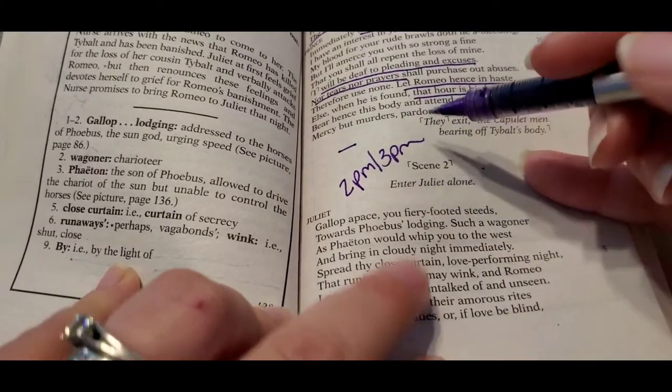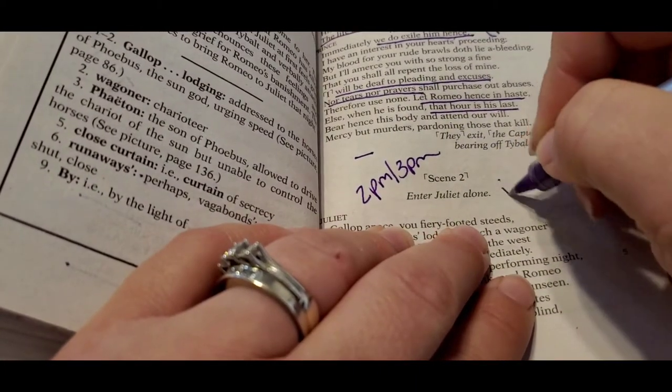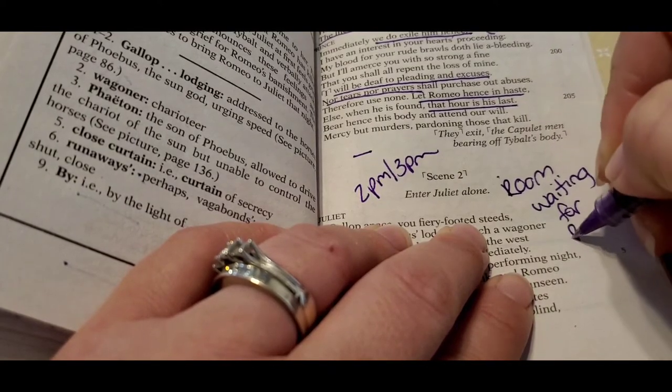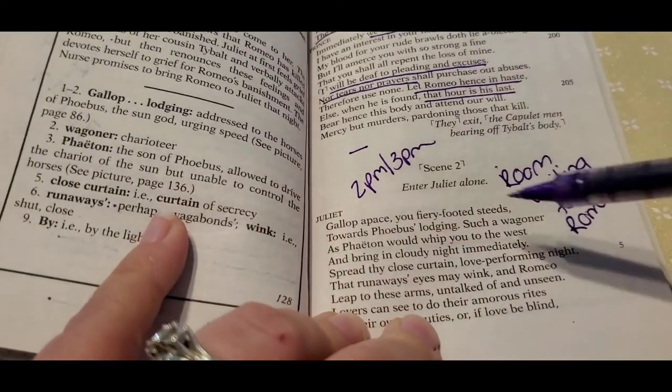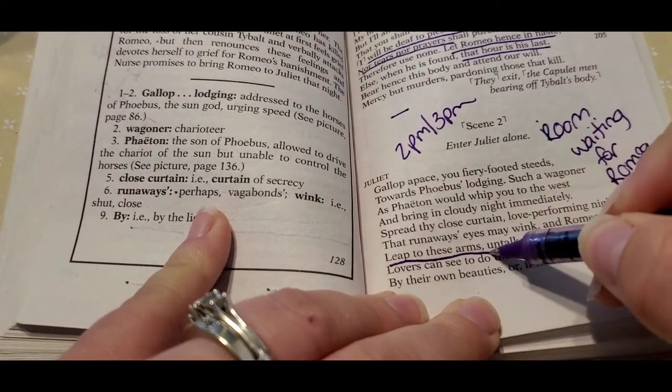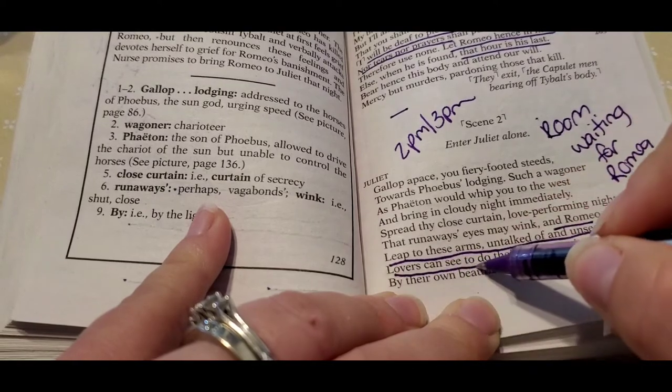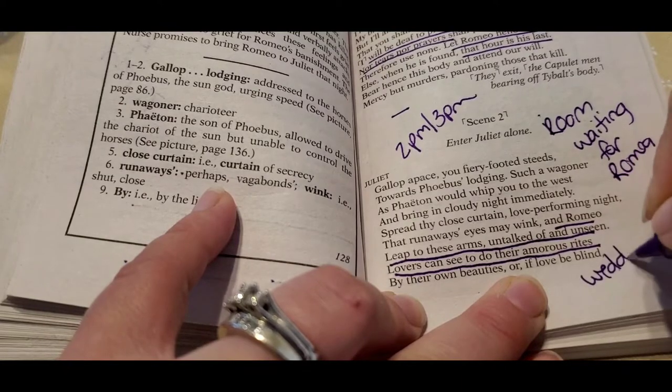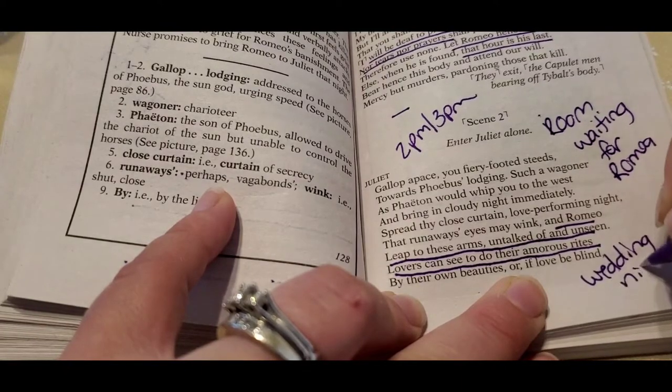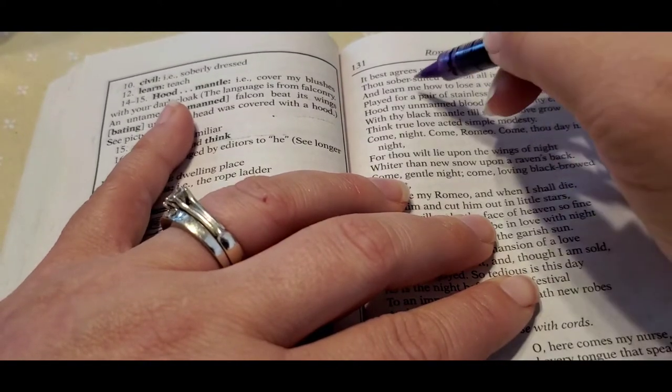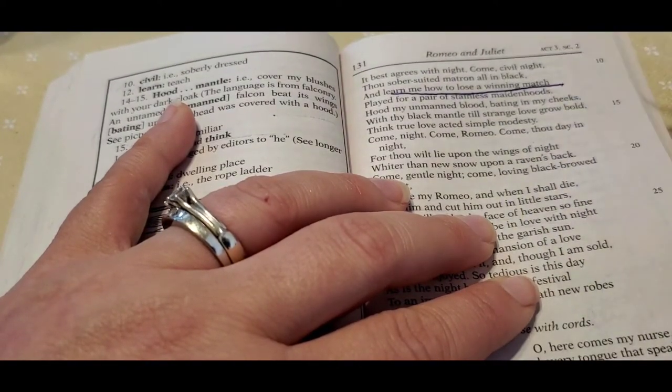So we start off, it's 2 p.m., 3 p.m. This is Juliet's room, and she's waiting for Romeo. Basically, she's saying she's very anxious here. She's saying, Romeo, leap to these arms, untalked of and unseen, so lovers can do their amorous rites. She's waiting for her wedding night.